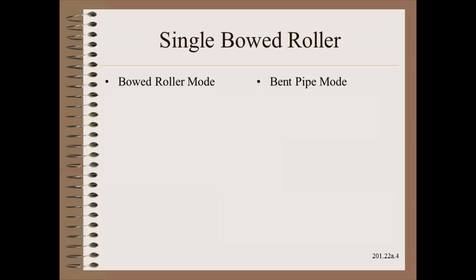The single bowed roller is one of the most widely used spreaders in the web industry, yet many do not know that it can operate in two distinctly different modes. Perhaps the most common in web manufacturing, such as paper and film, is the bowed roller mode. In contrast, in tissue manufacturing as well as in much of converting, you may see the bent pipe mode more commonly.